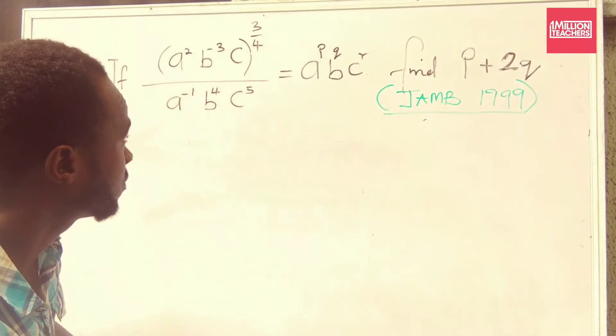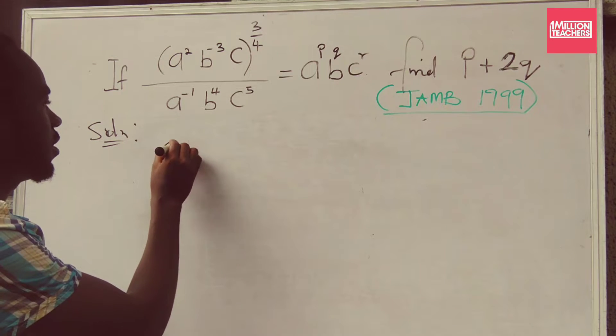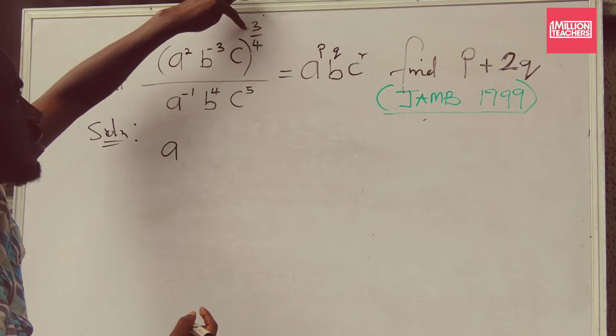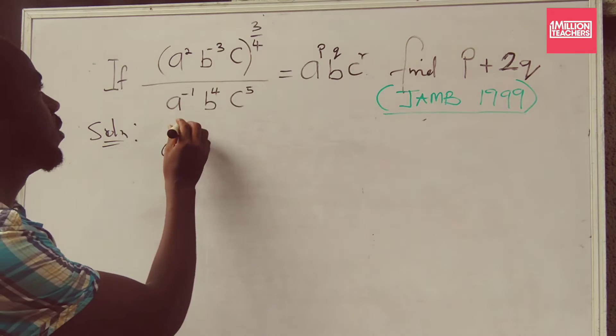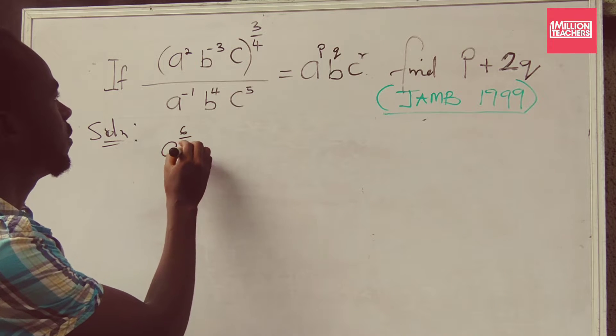So let's do that. We have a. So this power here times this. So 2 times 3 over 4, that will give me 6 over 4.